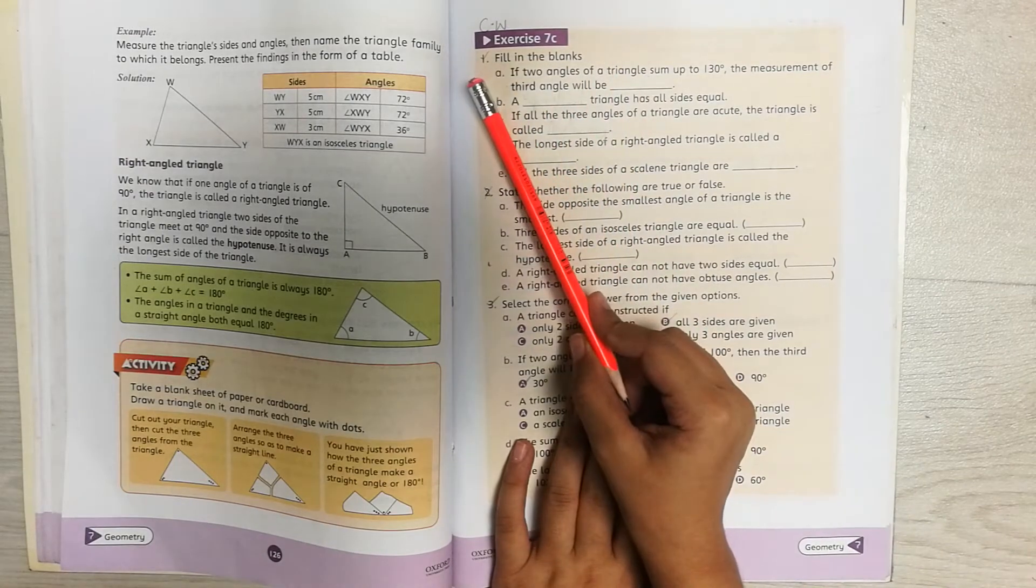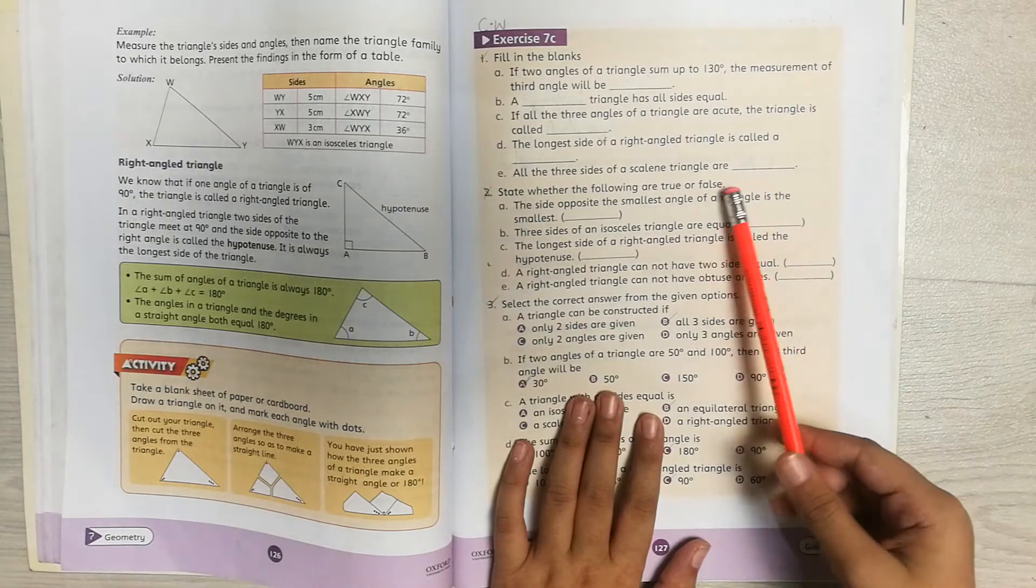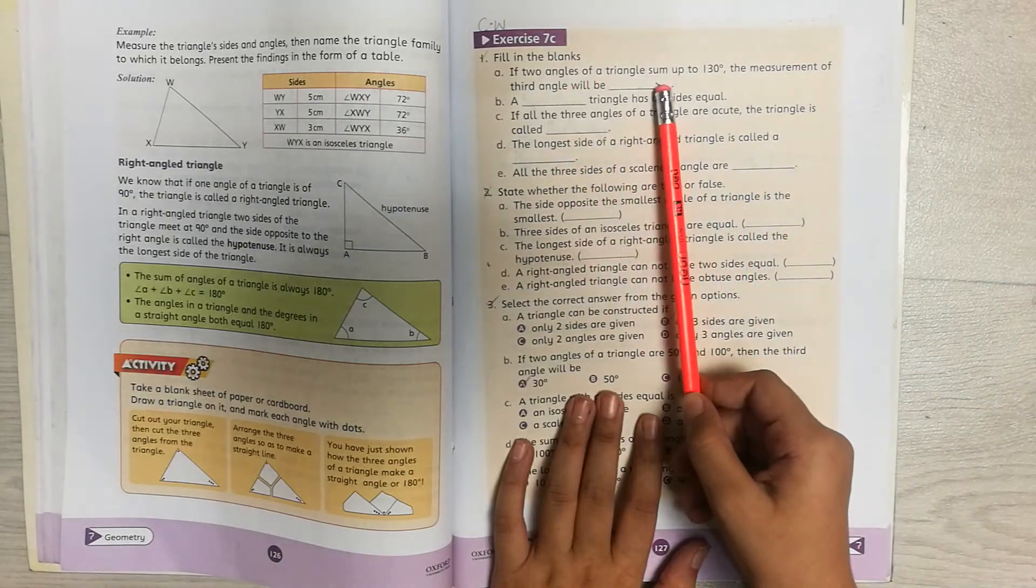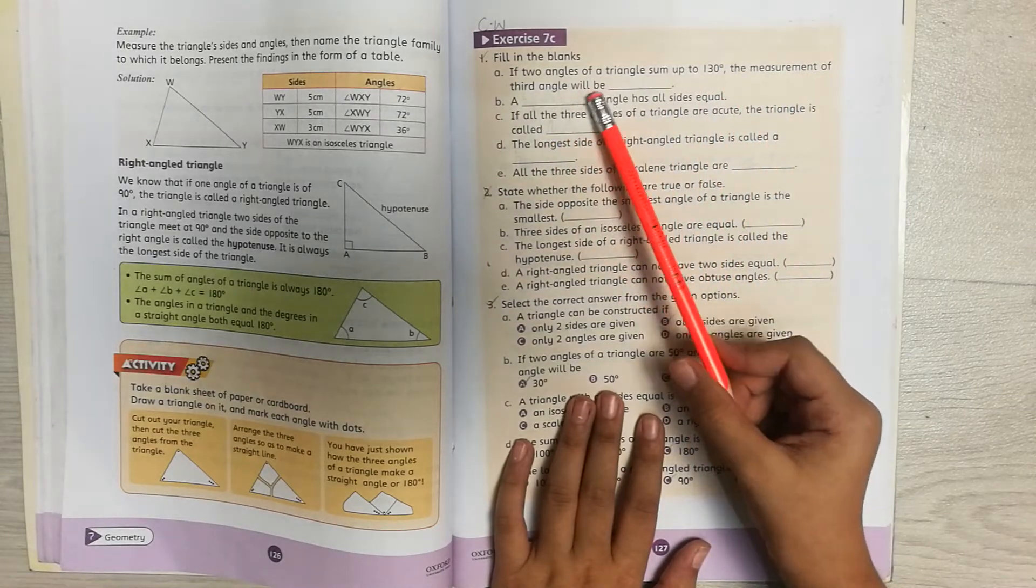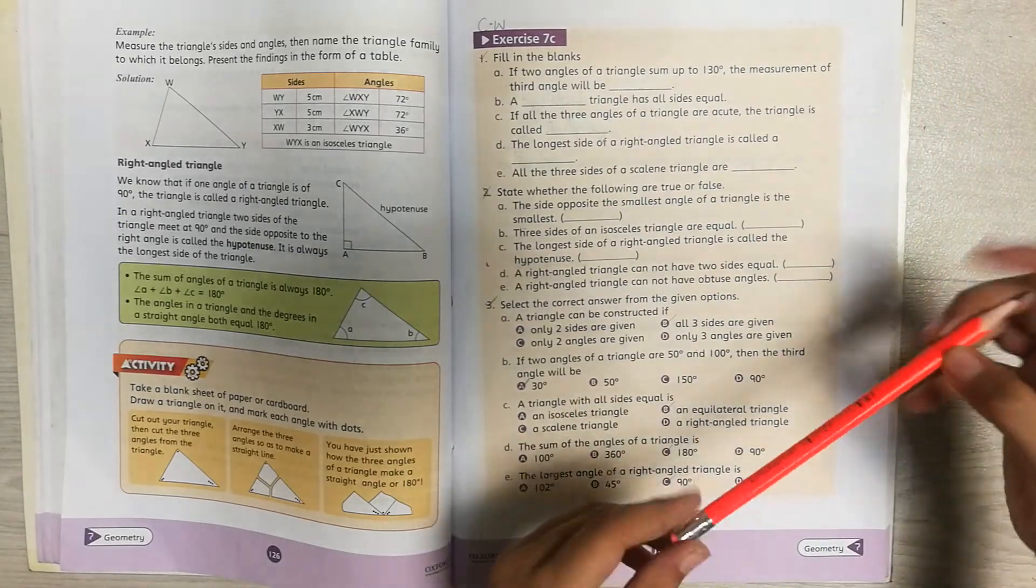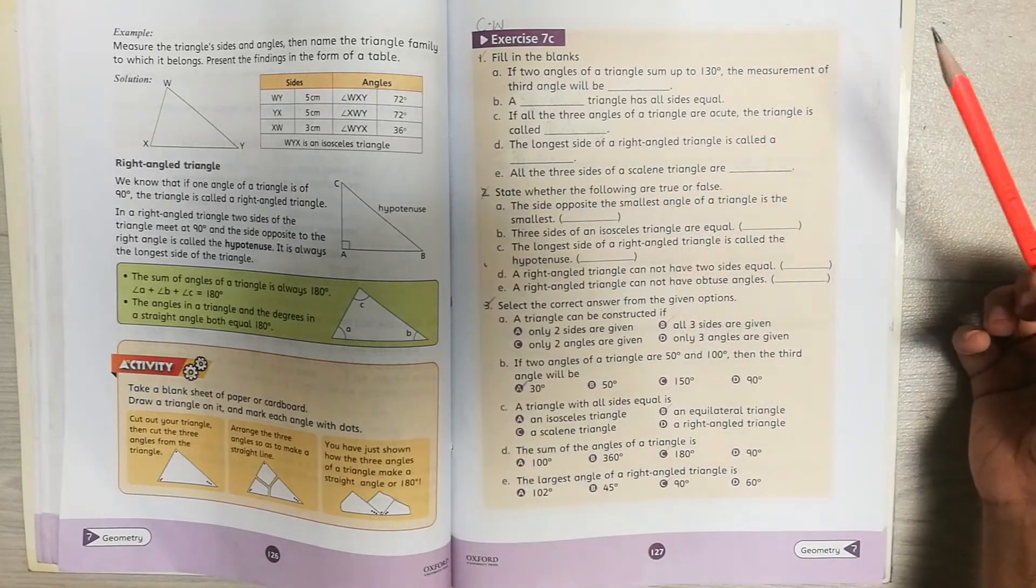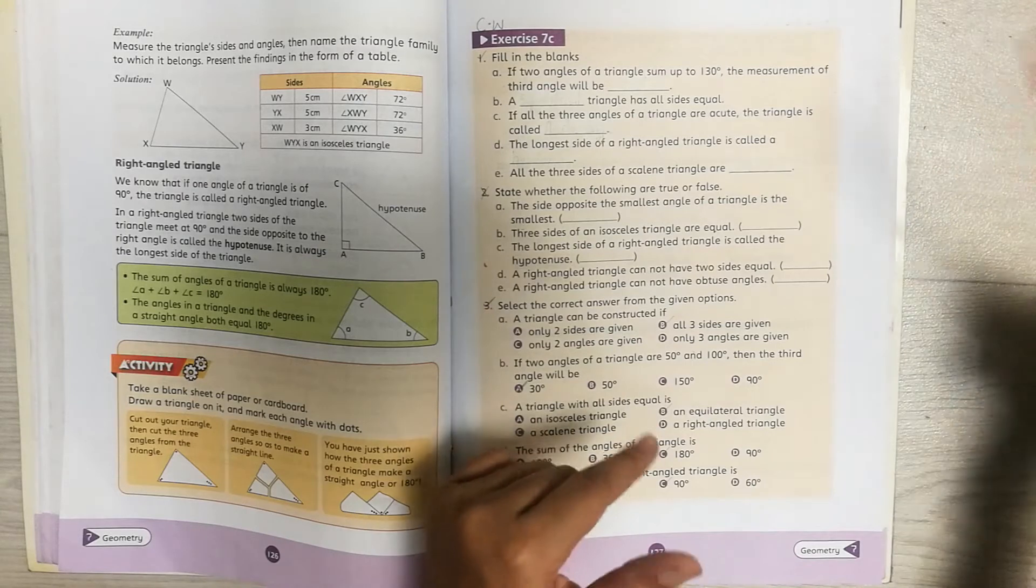Question number one, fill in the blanks. Let's read the first part. If two angles of a triangle sum up to 130, the measurement of the third angle will be blank. It's basically asking, if two angles sum up to 130, then what will be the measurement of the third angle?